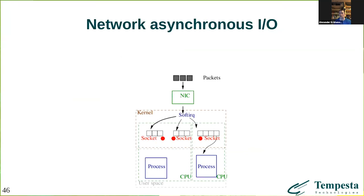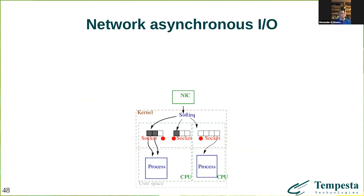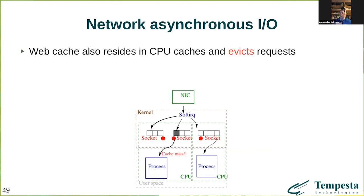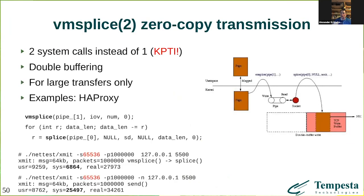Consider how network packets arrive at the network adapter. Software IRQ places packets into appropriate socket queues and sends a notification to the application process. The process starts to read from the socket and serves the request from cache. Typically cache is a relatively large data structure and it evicts other content from the CPU cache. By the time the server reads the last HTTP request from the socket, it has lost the start of cache from CPU cache. In Tempesta FW we use data-driven processing and process all requests while they're still hot in the CPU cache.